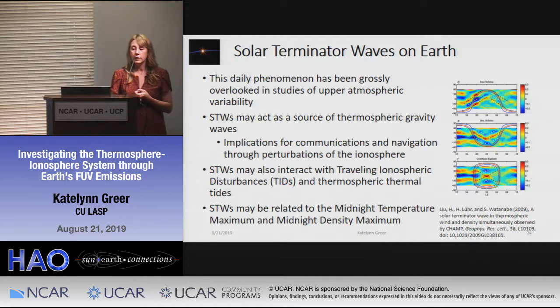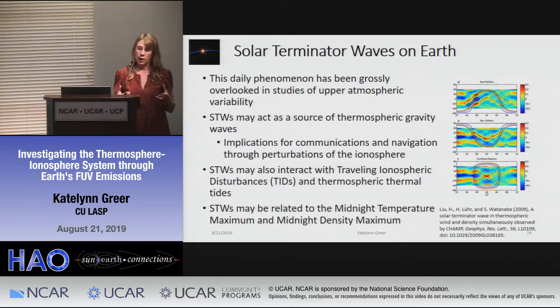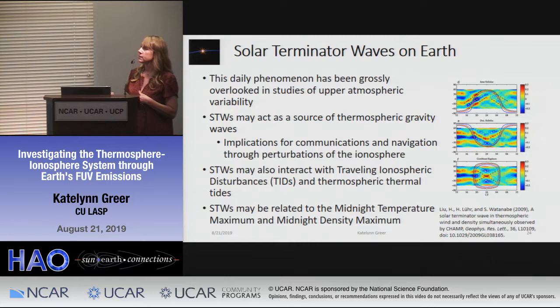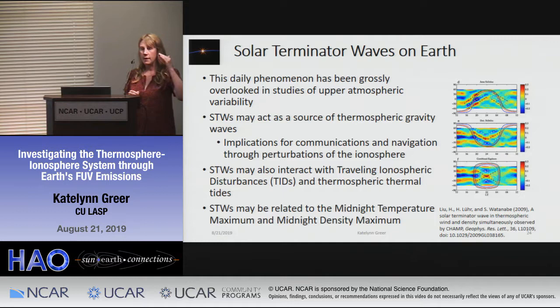I think this phenomenon has been grossly overlooked in thermospheric variability research. Solar terminator waves can act as sources of gravity waves with implications for communications and navigation through ionospheric perturbations, interact with traveling ionospheric disturbances and thermal tides, and may be related to the midnight temperature and density maximum. This additional CHAMP data plot shows the wave again about 30 degrees offset from the terminator line at different altitudes and seasons.